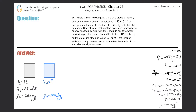Number 20, letter A. It is difficult to extinguish a fire on a crude oil tanker because each liter of crude oil releases 2.8 times 10 to the 7 joules of energy when burned. To illustrate this difficulty, calculate the number of liters of water that must be expended to absorb the energy released by burning one liter of crude oil, if the water has its temperature raised from 20 degrees Celsius to 100 degrees Celsius, it then boils, and the resulting steam is raised to 300 degrees Celsius.